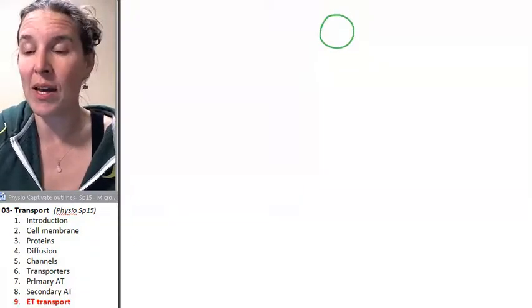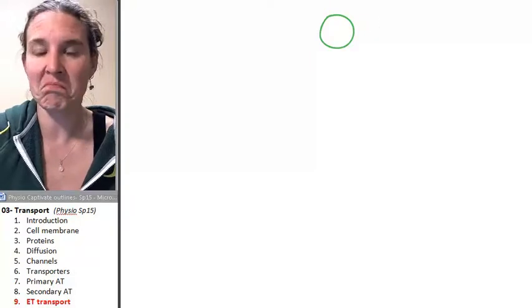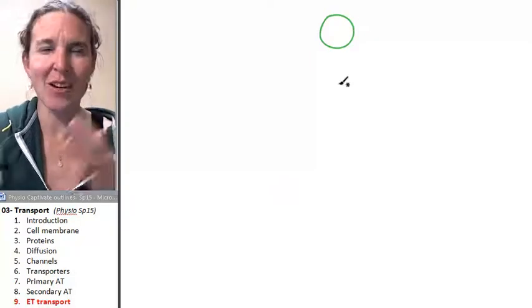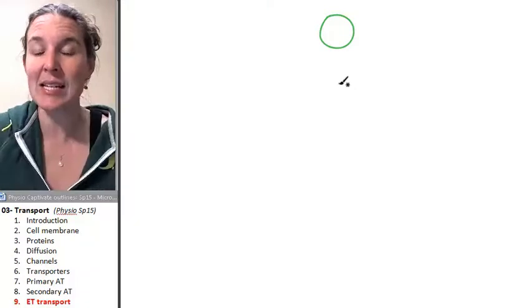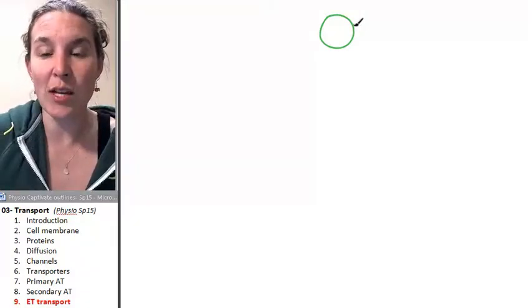That lets you visualize whatever shape it's going to be. Is it a channel? Is it a transporter like this? Different flavors of transporters.